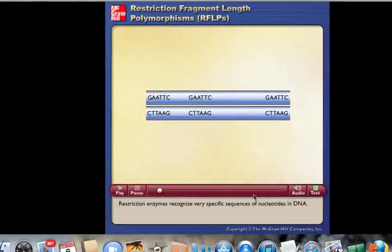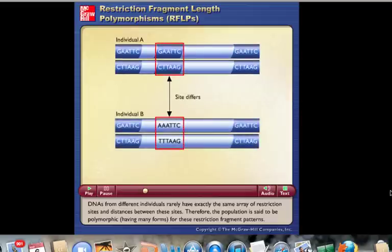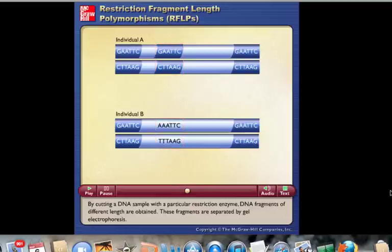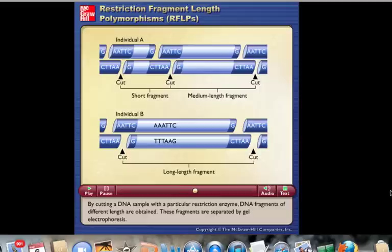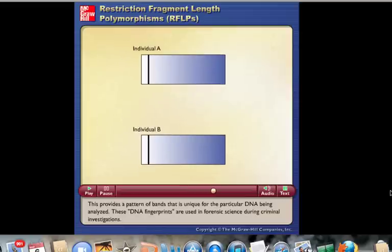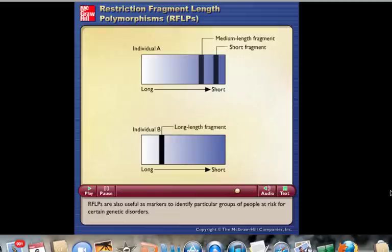Restriction enzymes recognize very specific sequences of nucleotides in DNA. DNAs from different individuals rarely have exactly the same array of restriction sites and distances between these sites. Therefore the population is said to be polymorphic, having many forms for these restriction fragment patterns. These differences are referred to as restriction fragment length polymorphisms, RFLPs. Such differences may arise through mutations. By cutting a DNA sample with a particular restriction enzyme, DNA fragments of different length are obtained. These fragments are separated by gel electrophoresis. This provides a pattern of bands that is unique for the particular DNA being analyzed. These DNA fingerprints are used in forensic science during criminal investigations. RFLPs are also useful as markers to identify particular groups of people at risk for certain genetic disorders.